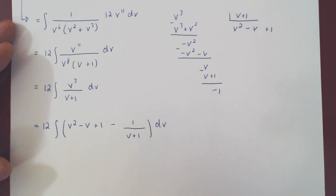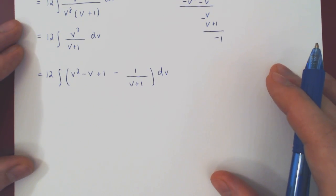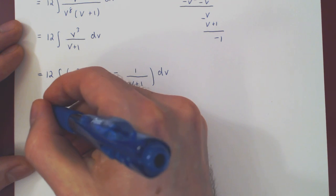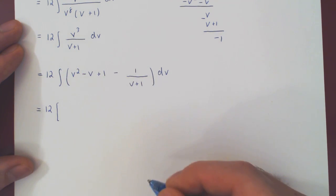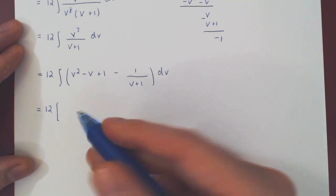And we have a very now straightforward integral. We'll leave 12 as a constant multiple. For the first three terms, we use the power rule.